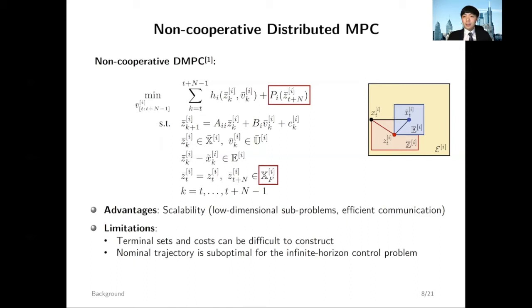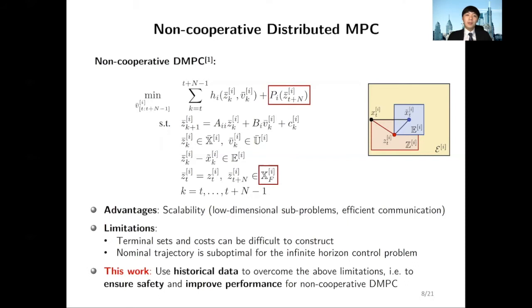However, the limitations are that the distributed terminal cost function and terminal sets may not be easy to compute in high dimensional spaces, and the closed-loop nominal trajectory is likely to be suboptimal for the infinite horizon control problem.